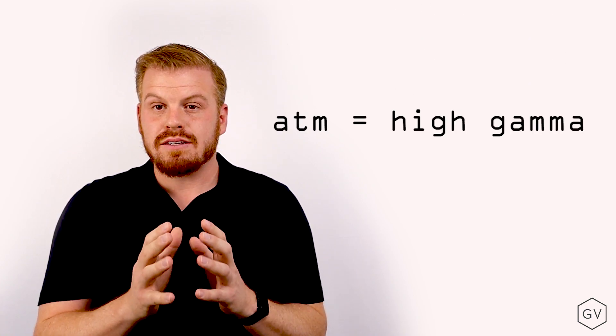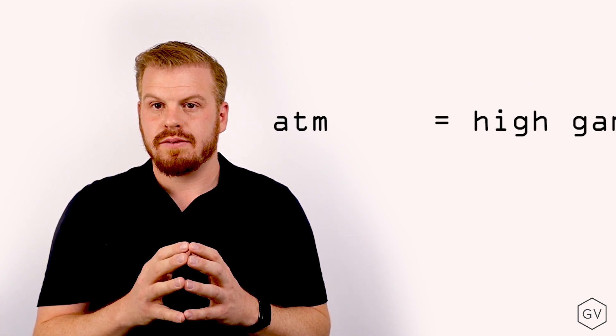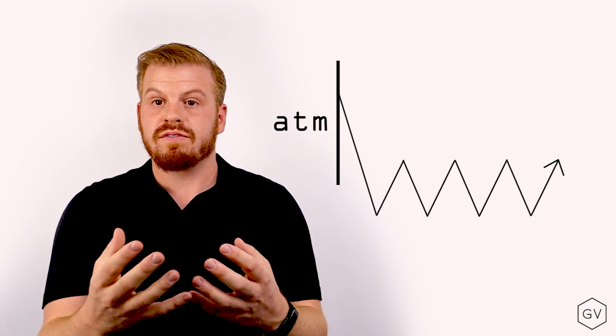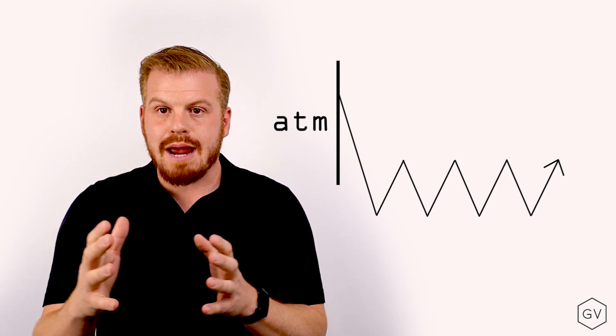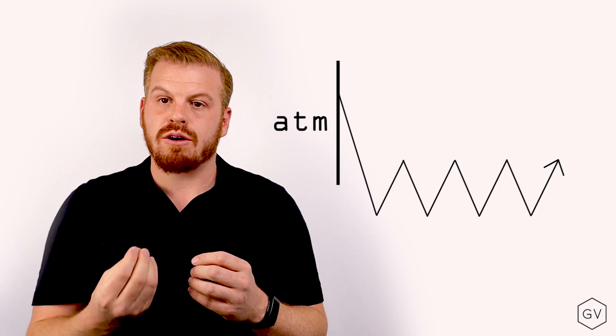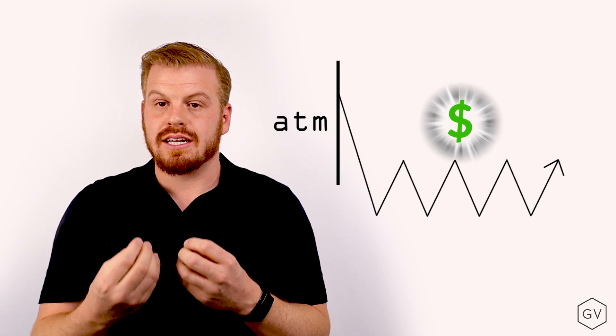Let's say that we have an at the money option. Well, the at the money option has the greatest gamma. And so if we bounce around our strike and stay near the money, our gamma scalping is going to be very profitable. But let's say that the underlying moves away from our strike and then the volatility comes in in this new zone where we are far away from our strike. Those gamma scalps are going to have smaller impacts.